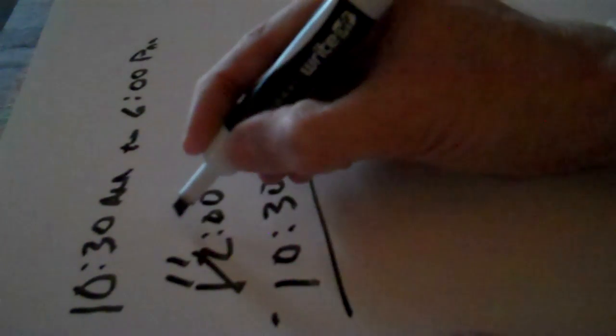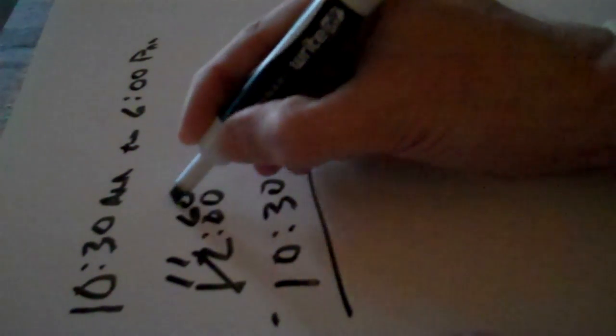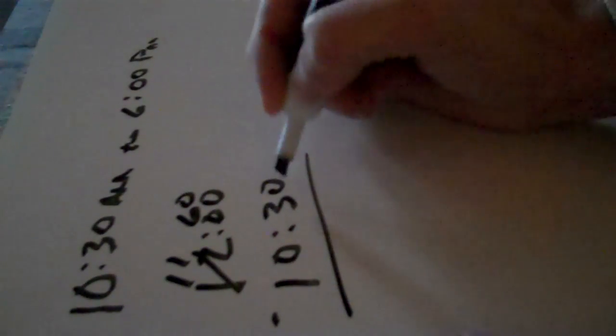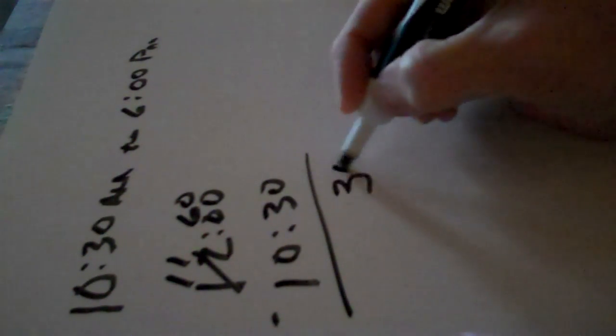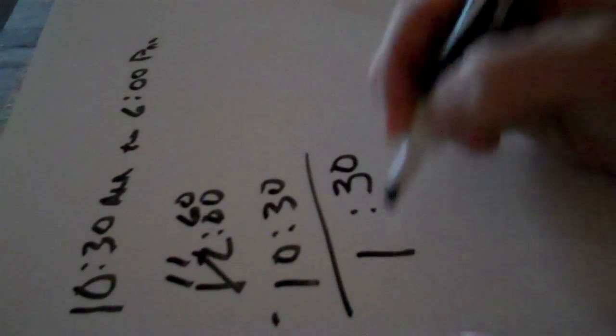And what am I borrowing? I'm actually borrowing a full 60 minutes. Now I can subtract 30 from 60, and I end up with 30, and then one hour.